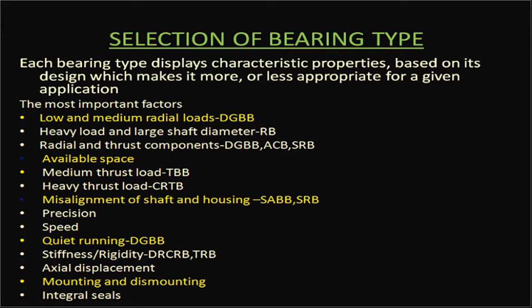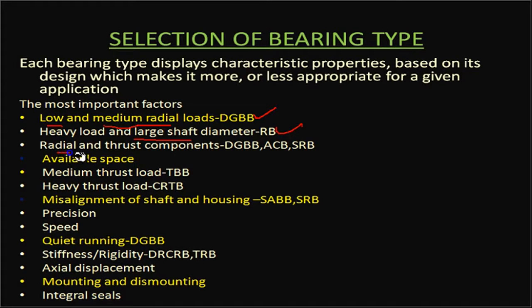When selecting a bearing for a particular application, each bearing type has characteristics that make it more or less appropriate. For low or medium radial loads, we use the deep groove ball bearing. For heavy loads and large shaft diameters, roller bearings are used. When both radial and thrust components must be carried, the deep groove ball bearing, angular contact ball bearing, or spherical roller bearing can be used — though the major load is radial and the thrust load is relatively less.